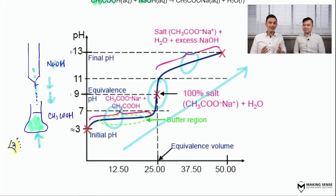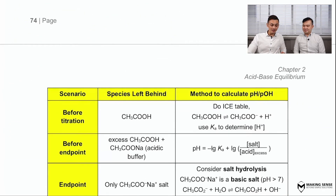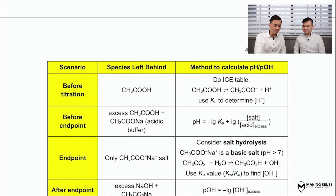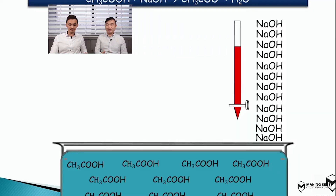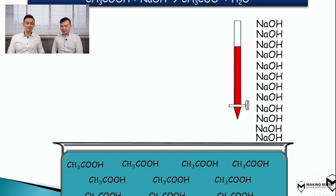The most important thing is to always focus on the conical flask — it's always about the conical flask. Ask yourself: what is in the conical flask? Based on what is present, apply the correct methods based on the situations. We are focusing on what species are left behind, and each species has a particular method to solve for the pH. Now we're going to focus on what species are present inside the conical flask, and we're going to use this simulation to help us visualize this a little better.